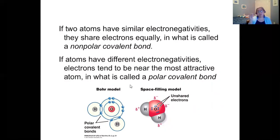If the two atoms have similar electronegativities they share the bond equally. No one is going to take the electrons more than another and that's called a non-polar covalent bond. But if the atoms have different electronegativities the electron tends to be near the most attractive atom and that's called a polar covalent bond. What you're seeing here is two different models of the same molecule. That's a water molecule. I know it's water because it's got two H's and an O and you're seeing here is the electrons that are being shared between them.